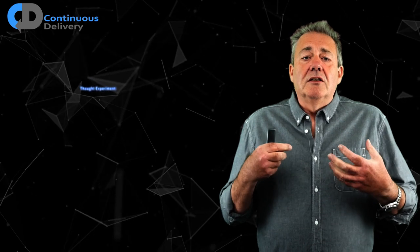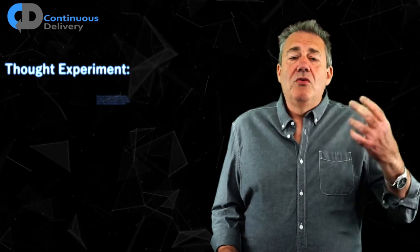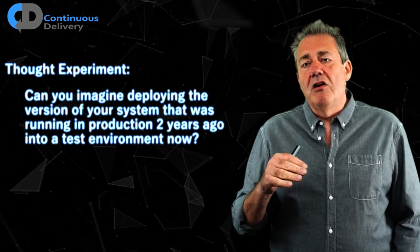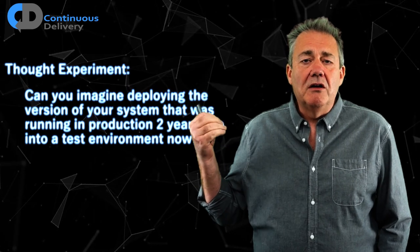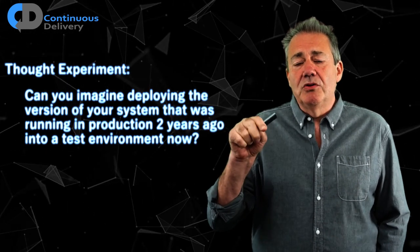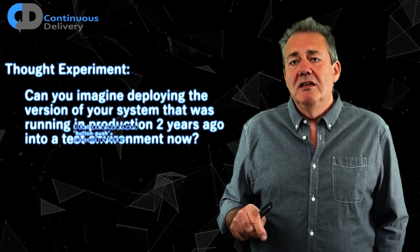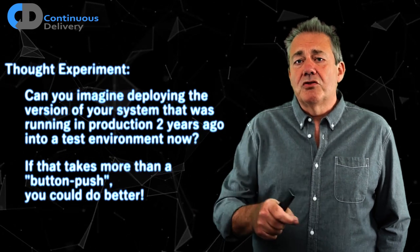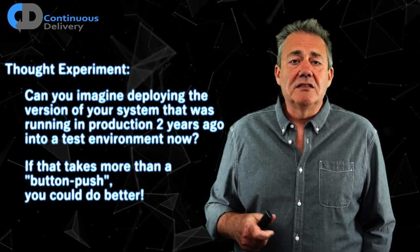Infrastructure as code also gives us deployment flexibility. If we've automated all of these things it's relatively easy to reproduce a functioning environment somewhere else for the systems that we build and all of their infrastructure. A good thought experiment is to imagine running a version of your software that was in production a year or two ago and deploying that to a local test environment today at the push of a button. If you can do that, your configuration management is excellent and your infrastructure as code is well sorted out. If you can't, there's room for improvement.